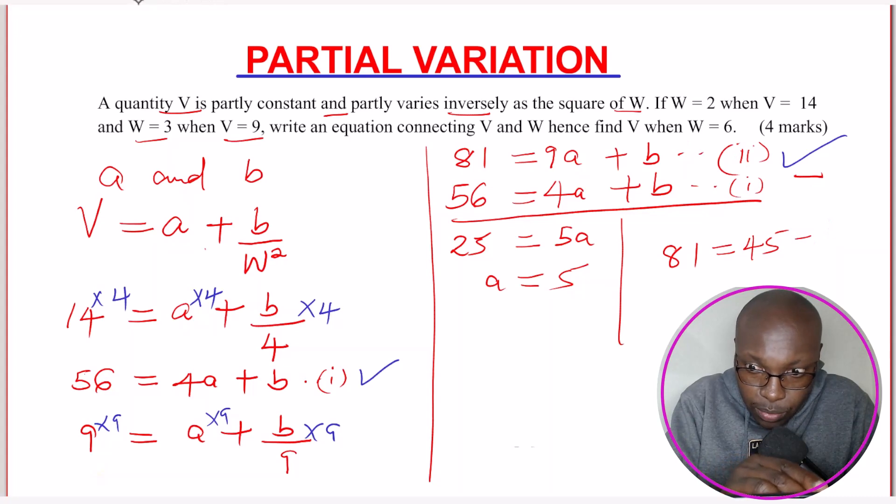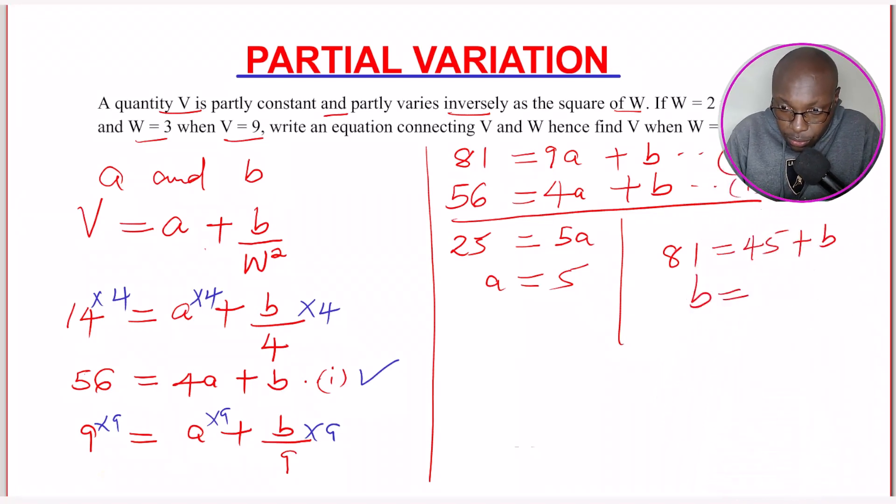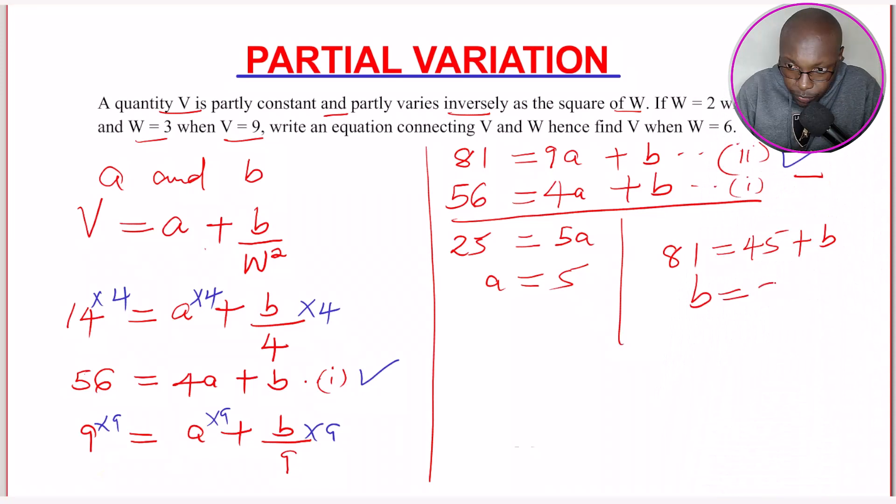So it's not equals, but this is plus B. Like that. So here, B = this will give 36.